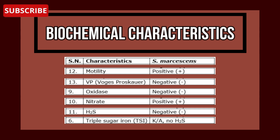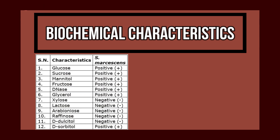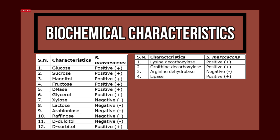VP test is negative, and there is no formation of spores. Fermentation characteristics: glucose, sucrose, mannitol, fructose, DNase, glycerol, and sorbitol are positive, whereas xylose, lactose, arabinose, raffinose, and dulcitol are negative. Enzymatic reactions: lysine decarboxylase is positive, ornithine decarboxylase is positive, arginine dihydrolase is negative, and lipase is positive.